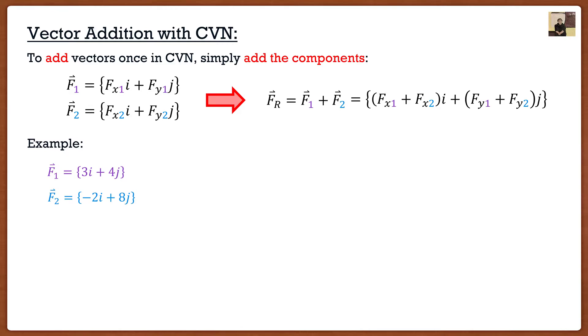If we had f1 as 3i plus 4j and f2 as negative 2i plus 8j, if I wanted to add them together all I do is take the two i components, so 3 from f1 plus negative 2 from f2, and the j direction is going to be 4 from f1 plus 8 from f2.